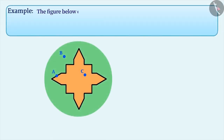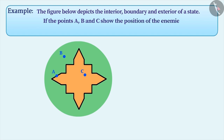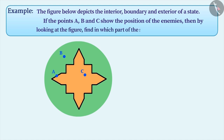In the given figure below, the interior, boundary, and exterior of a state are marked. If points A, B, and C represent positions of the enemy, by looking at the figure, find out which part of the state the enemies are positioned in.